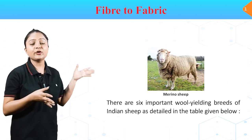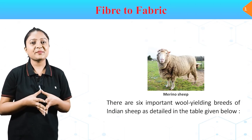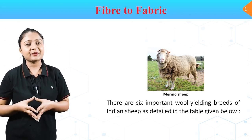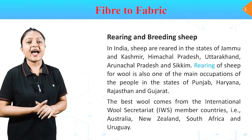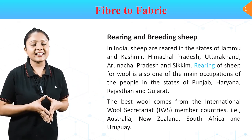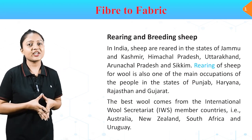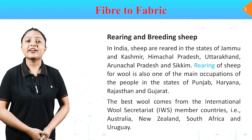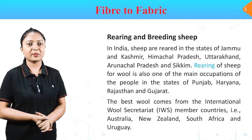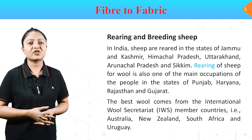In this picture we can see a Merino sheep. There are six important wool-yielding breeds of Indian sheep as detailed in the table. Rearing and breeding sheep — in India, sheep are reared in the states of Jammu and Kashmir, Himachal Pradesh, Uttarakhand, Arunachal Pradesh and Sikkim. Rearing of sheep for wool is also a main occupation in Punjab, Haryana, Rajasthan and Gujarat.